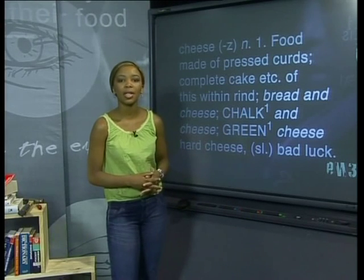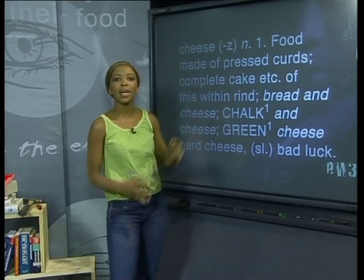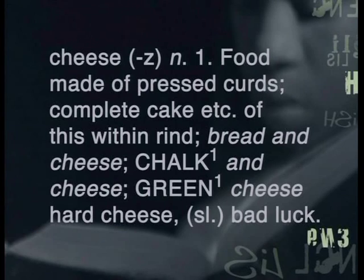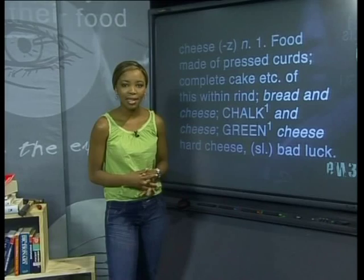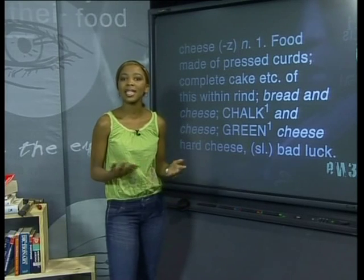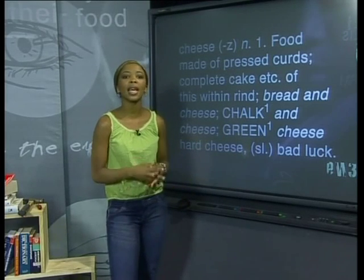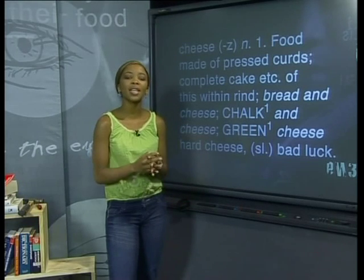What do the letters in brackets behind the word cheese mean? The letters in brackets that appear after the head word are an indication of the pronunciation. After the word cheese, we have a Z indicating that it's pronounced 'cheese'. Sometimes the whole word is written phonetically, which means as it is pronounced. But in this case, because cheese is a simple word, we are just given the tricky part.